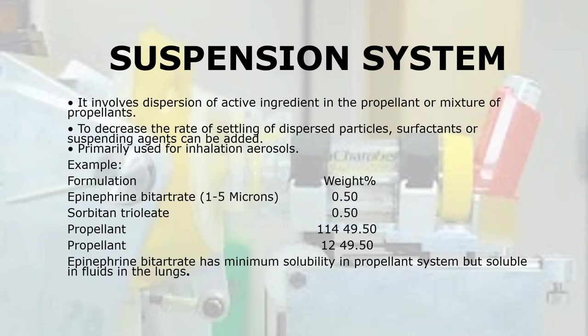The Suspension system involves dispersion of active ingredients in the propellant or mixture of propellants. To decrease the rate of settling of dispersed particles, surfactants or suspending agents can be added. Primarily used for inhalation aerosols. Example formulation by weight percentage: Epinephrine bitartrate (1–5 microns) at 0.50%, Sorbitan trioleate at 0.50%, Propellant 114 at 49.50%, and Propellant 12 at 49.50%. Epinephrine bitartrate has minimum solubility in the propellant system but is soluble in fluids in the lungs.